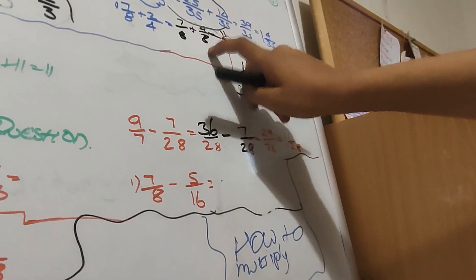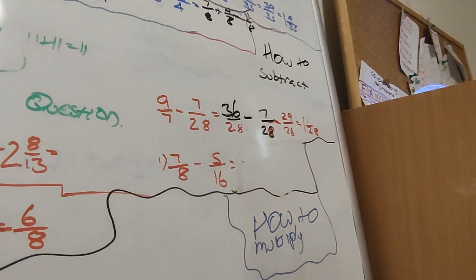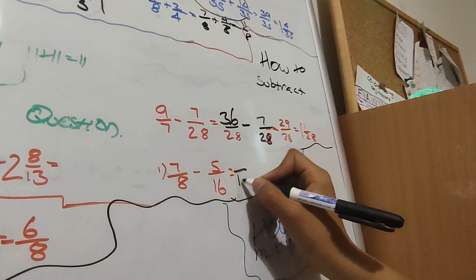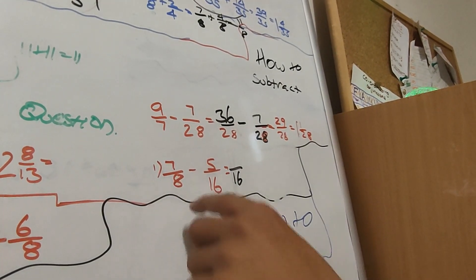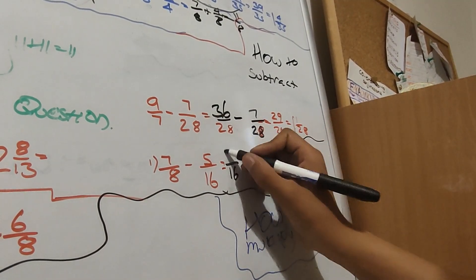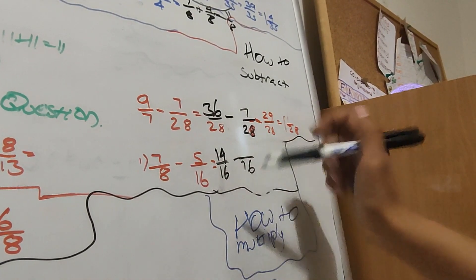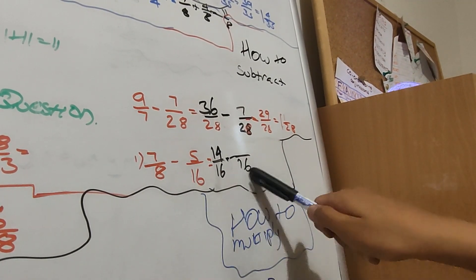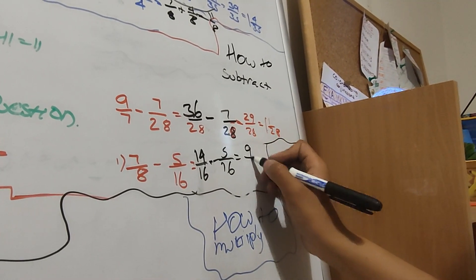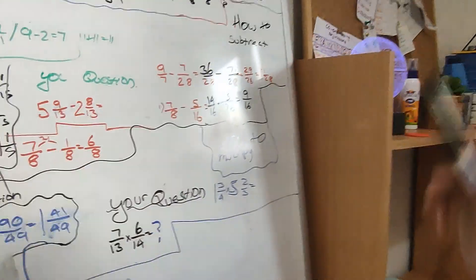So again you just have to find a common denominator. The common denominator between 8 and 16 is 16. So 8 times 2 is 16, and then you do 7 times 2 which is 14. Then you do the minus: 16 times 1 is 16, so 5 times 1 is 5. You subtract them which is 9/16. So that's how to subtract fractions.